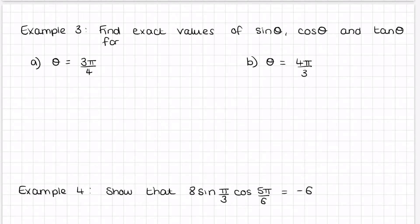Example 3: find exact values of sin θ, cos θ, and tan θ for θ = 3π/4. You need to refer back to a unit circle. 3π/4 is located here on the circle, and this portion to the x-axis would be π/4, because 180 degrees is π. So we just need to think about π/4, which is 45 degrees, and go to our exact value triangles.